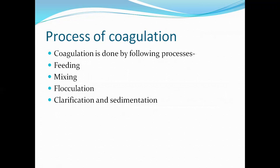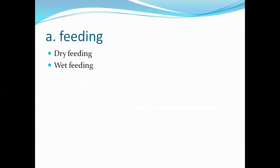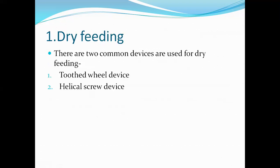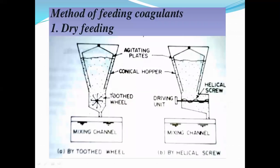There are four processes of coagulation: first is feeding, second is mixing, third is flocculation, and fourth is clarification with sedimentation. We discussed the first process — feeding — which has two types: dry feeding and wet feeding. Dry feeding uses two devices: the toothed wheel device and the helical screw device. The process of wet feeding will be discussed in the next lecture.